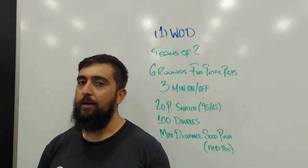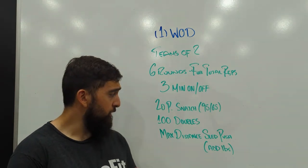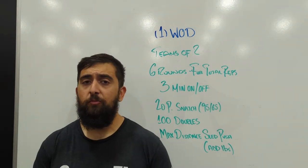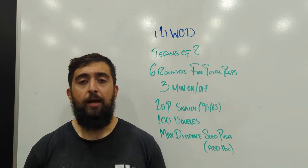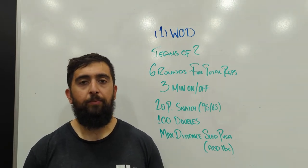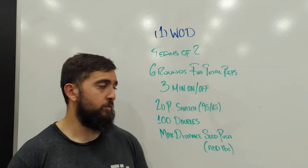If you have a partner that has doubles and one has single unders, we can say for the partner that has doubles, let's aim for 50 double unders at least. And then for a person that doesn't have the double unders, let's do 150 single skips as a substitution.